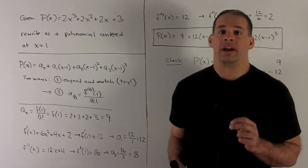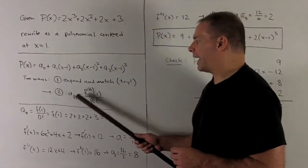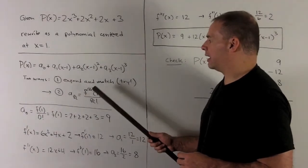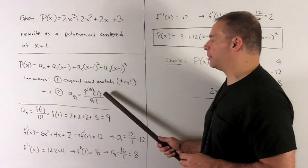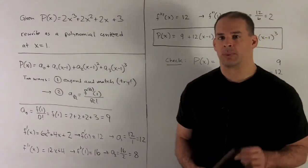So for the second way, we just use the formula for getting Taylor polynomials, which is aₖ equals the kth derivative of f evaluated at the center, in this case 1, and then we divide by k factorial. So let's push that through.